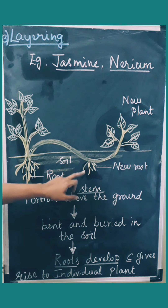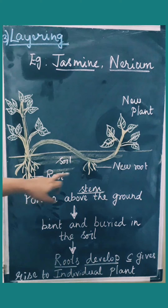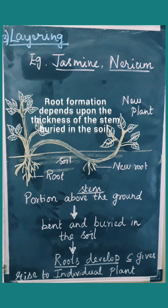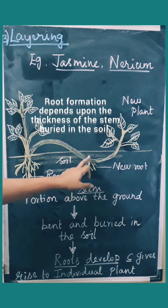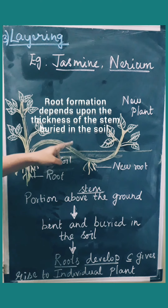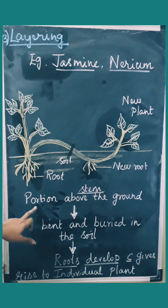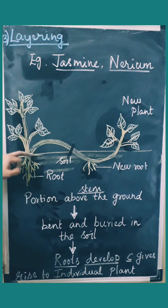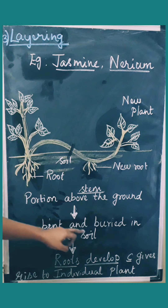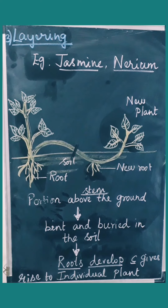The plant is watered and after a period of time — say two to three months or six to eight months depending on the size of the plant and the buried branch — the buried part starts generating new roots. It can then be gently cut from the parent plant and will become an individual plant. So the stem portion above the ground is bent and buried in the soil, roots develop, and it gives rise to an individual plant.